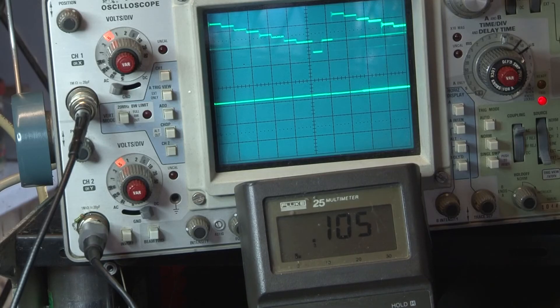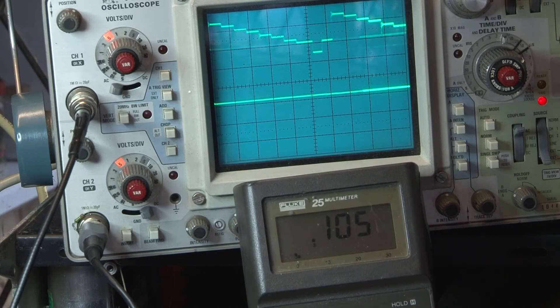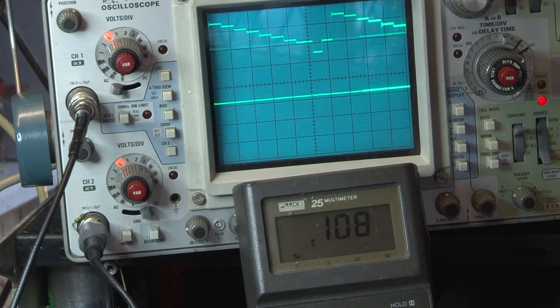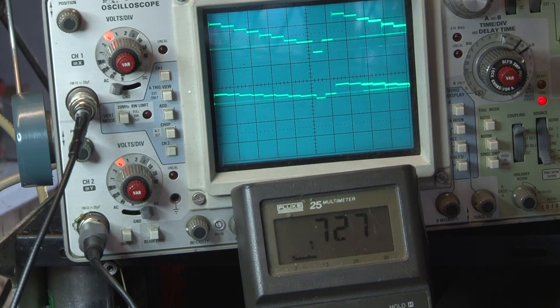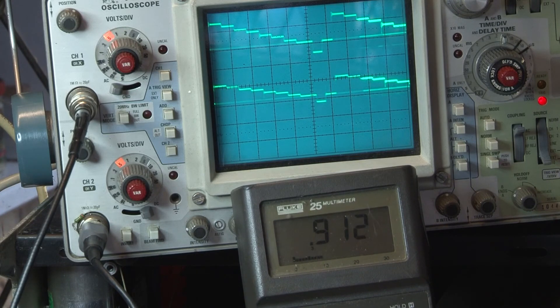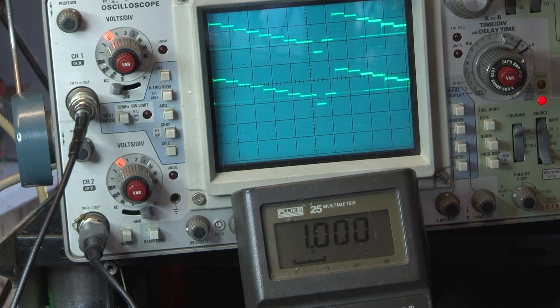So the meter is now showing the voltage across the resistor itself. As we advance the contrast control slowly we can see that the video waveform increases just as it should.